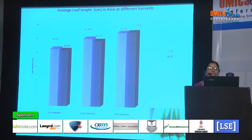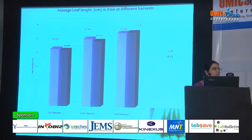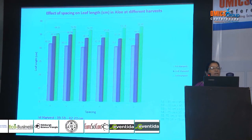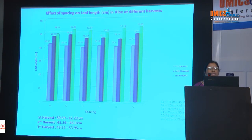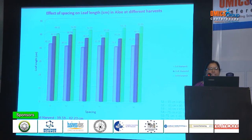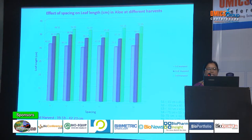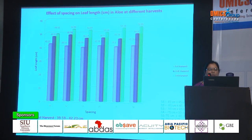This slide shows the average length of the aloe vera leaf at different harvests. During the first harvest, the average leaf length is around 40 cm, whereas in the third harvest the leaf length goes to 50.52 cm. There is no significant difference between the two varieties with reference to leaf length. The range during the first harvest is 39.59 to 42.23 cm; during the second harvest, 45.39 to 48.9 cm; and during the third harvest, 49.52 to 53.95 cm.